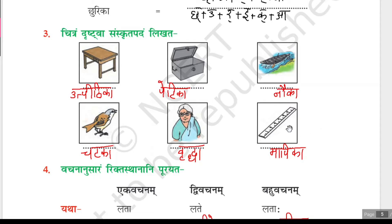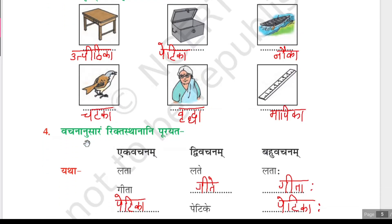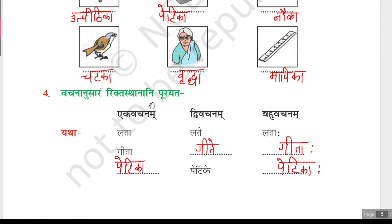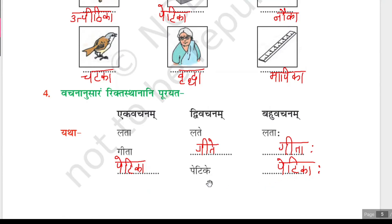Next is ruler: Mapika. Now the fourth question: Vachananuusaram rikthasthanaani purayata — according to the vachanam numbers we have to fill in the blanks. Model: latta, latte, lattaha. Next, Geeta is given for ekavachanam; we fill in geete for dvivachanam and geetaha for bahuvachanam. Next, petike is given as dvivachanam; petika is ekavachanam and petikaha is bahuvachanam.